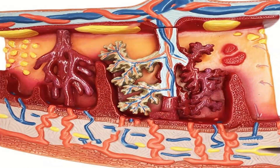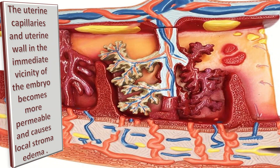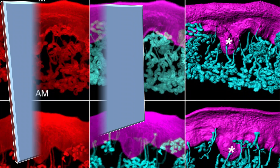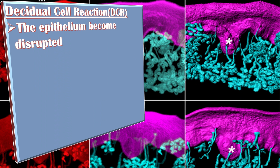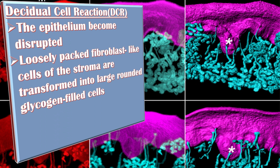The uterine capillaries and the uterine wall in the immediate vicinity of the embryo become more permeable and cause local stromal edema. The endometrium around the embryo shows signs of decidual cell reactions, which include: first, the epithelium becomes disrupted; second, loosely packed fibroblast-like cells of the stroma are transformed into large rounded glycogen-filled cells.